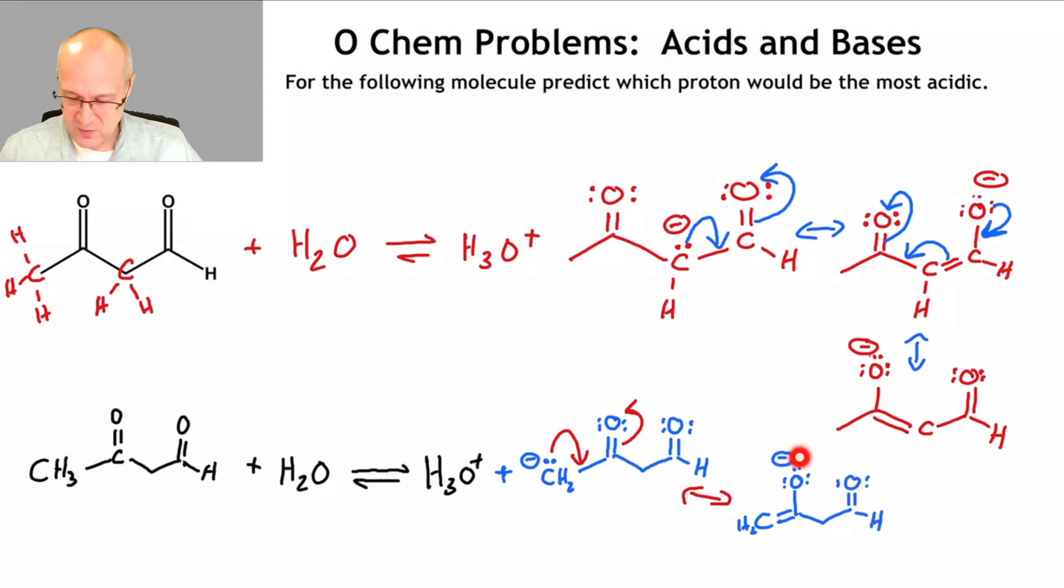There you go. So now this particular base only has two resonance forms. Two. This other one has three. Now, granted, one of those three has the anion on carbon. But the other two put the anion onto oxygen. And that's a good deal. Putting anions onto oxygen is a good deal. If you can do that, that makes your resonance forms major contributors. So in this case, this is a major contributor.